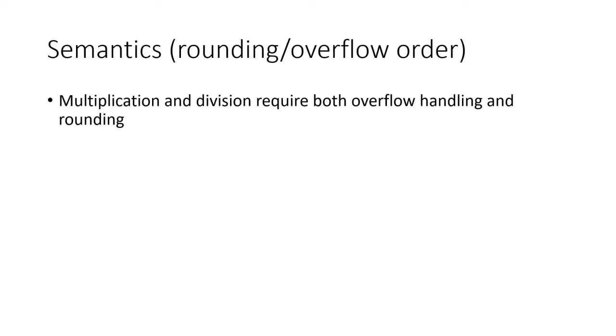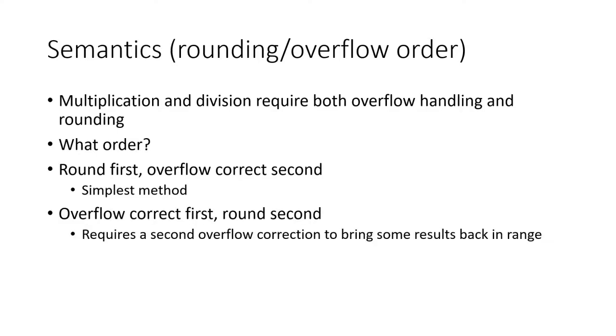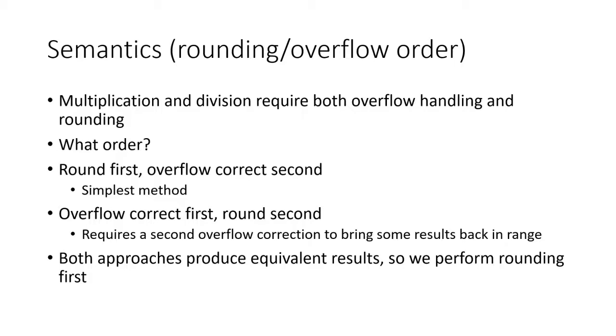Multiplication and division require both overflow handling and rounding. What is the interaction between the two modes, and what effect does the order of applying these operations have? If we round the result first and then apply overflow handling second, we get a valid fixed-point number. This is because rounding makes the fractional portion representable, then overflow correction makes the entire number representable. If we apply overflow handling first, then rounding second, we may end up with an unrepresentable number. This happens when the overflow corrected result is between the maximum representable number and the next fraction. If round-up rounding is applied, then the result will be out of range. This can be remedied by applying another round of overflow correction. Fortunately, both methods ultimately produce the same number, so we defined the sequence of operations as applying rounding first, then overflow correction second.